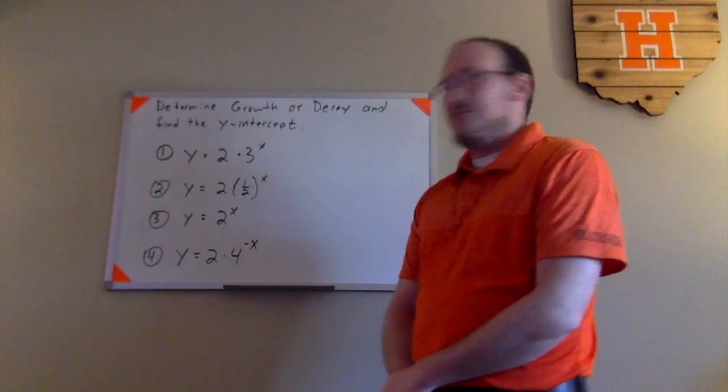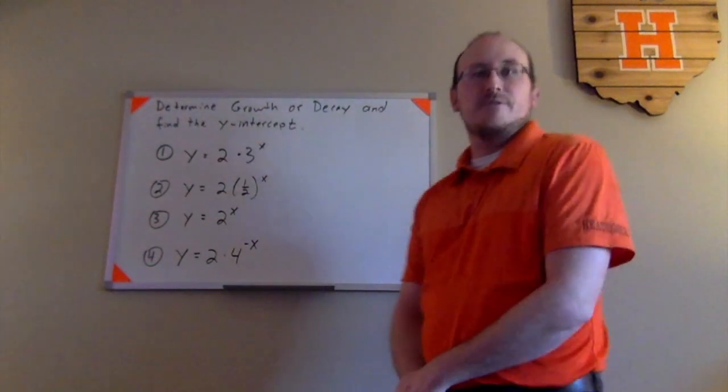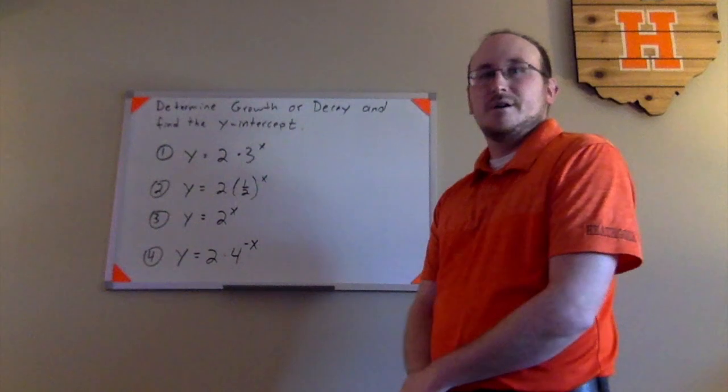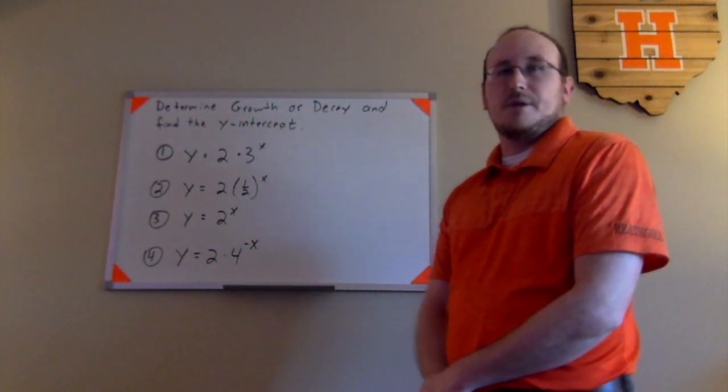The third one there, we have y equals 2 to the x. Be careful on this one. I'll give you an opportunity to think about whether that's growth or decay and what the y-intercept is there as well.